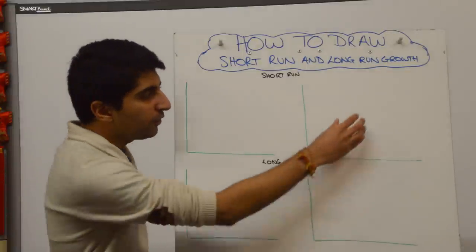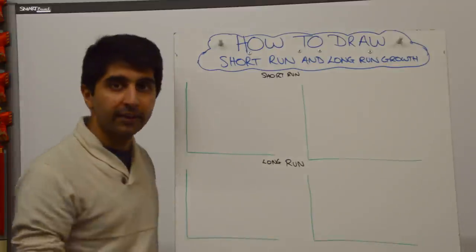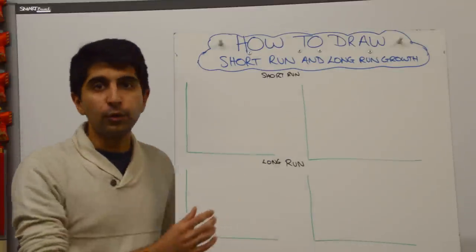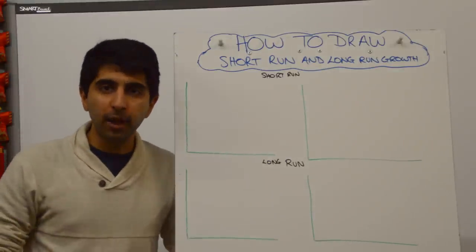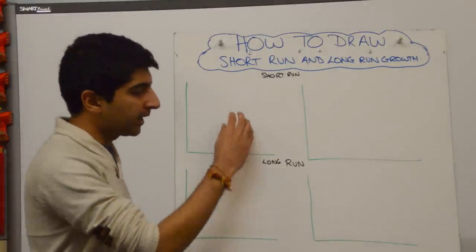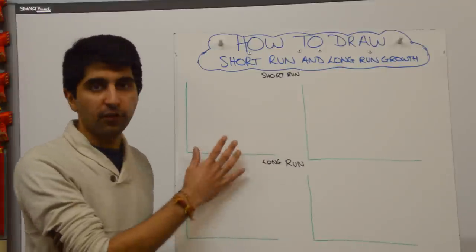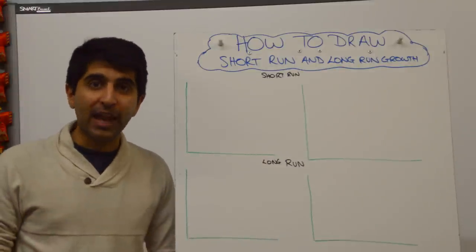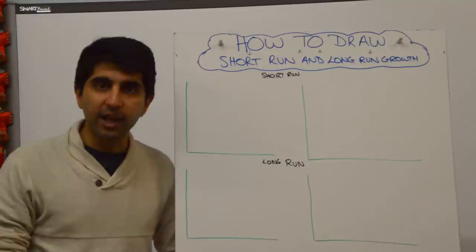We can use PPFs, which I'm going to show on the right-hand side here, and we can also use our aggregate demand and aggregate supply models. I'm going to use my classical interpretations on the left here. You could also use the Keynesian interpretations that I've taught you in previous videos.